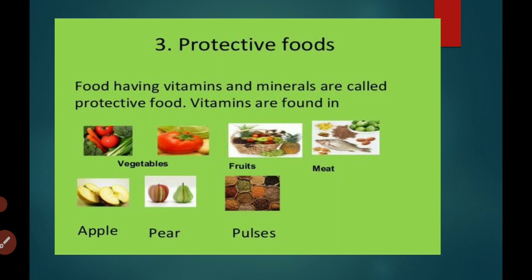Different kinds of utensils are used to cook different kinds of food. In cities, people cook on gas ovens or microwave ovens. In villages, people use chulhas or kerosene oil stoves for cooking. We use different types of cooking methods: frying method, steaming or boiling method, roasting method, and baking method.